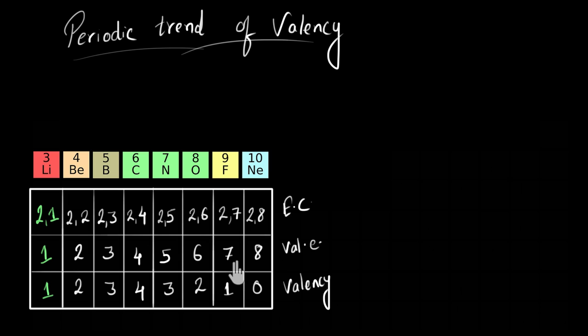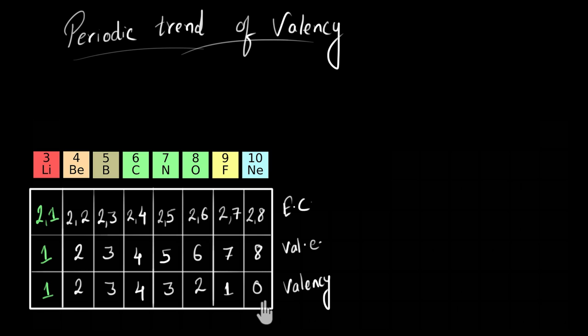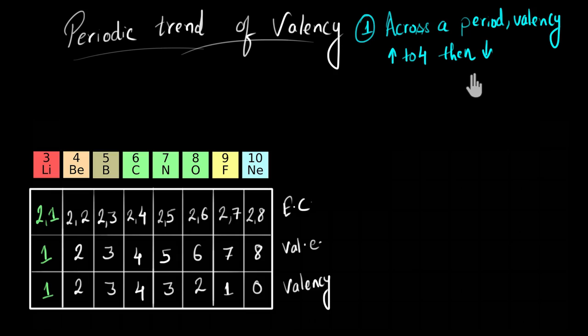If you focus on oxygen and fluorine, they have six and seven valence electrons. It will be easier for them to gain two or one electron to have a noble gas configuration, so their valency is two and one respectively. Neon itself is a noble gas with a complete octet already; in a chemical reaction it does not need to gain, lose, or share electrons, so its valency is zero. If you see the pattern of valency as we move across the period, valency first increases — one, two, three, four — and then decreases — four, three, two, one, zero. So as we move across a period, the valency first increases and then decreases.